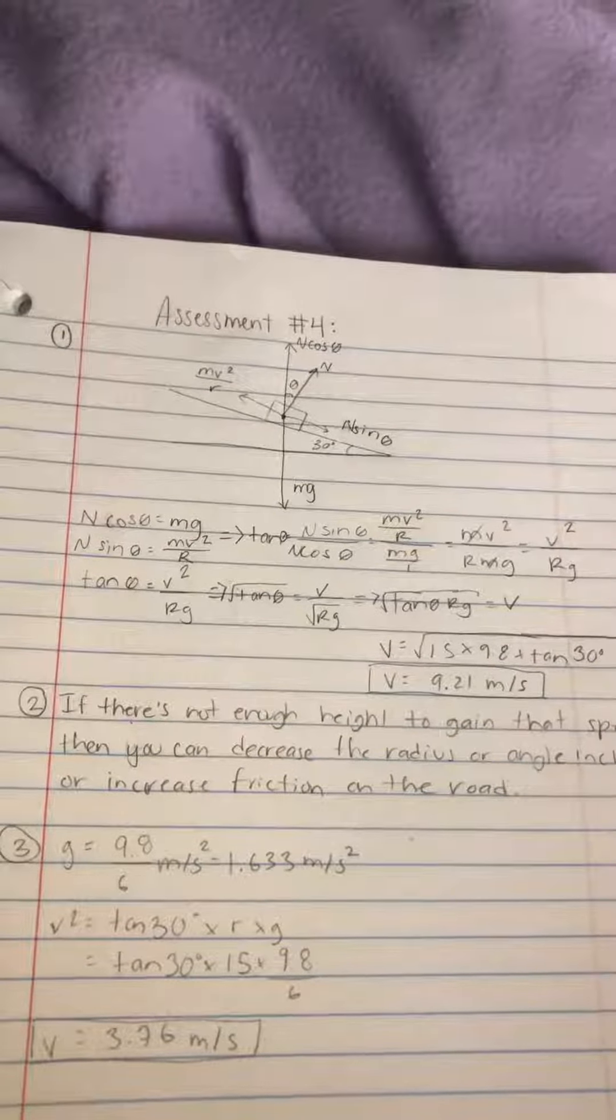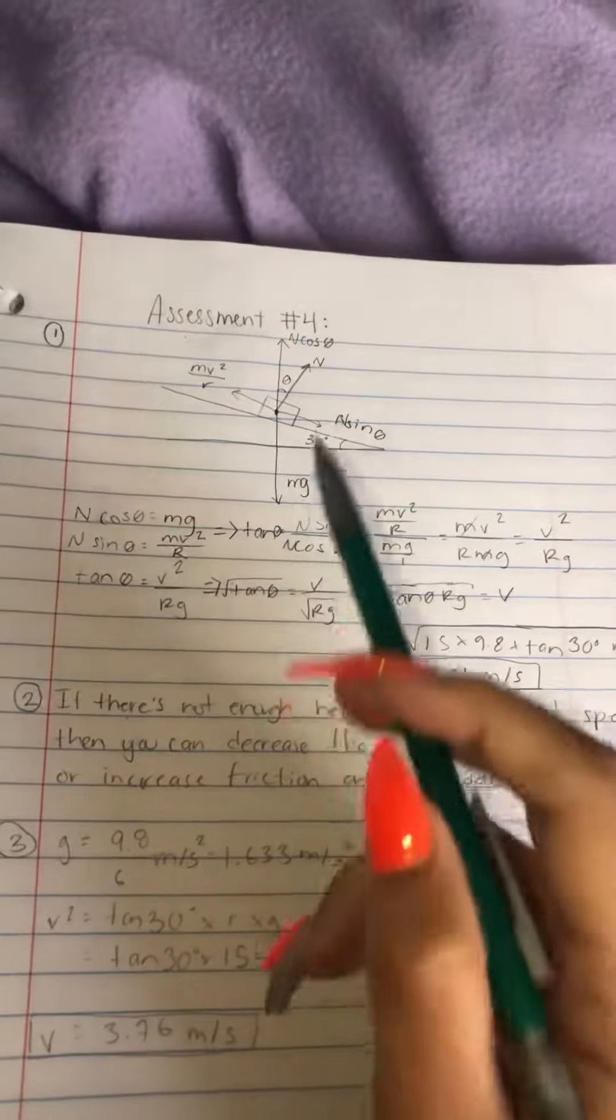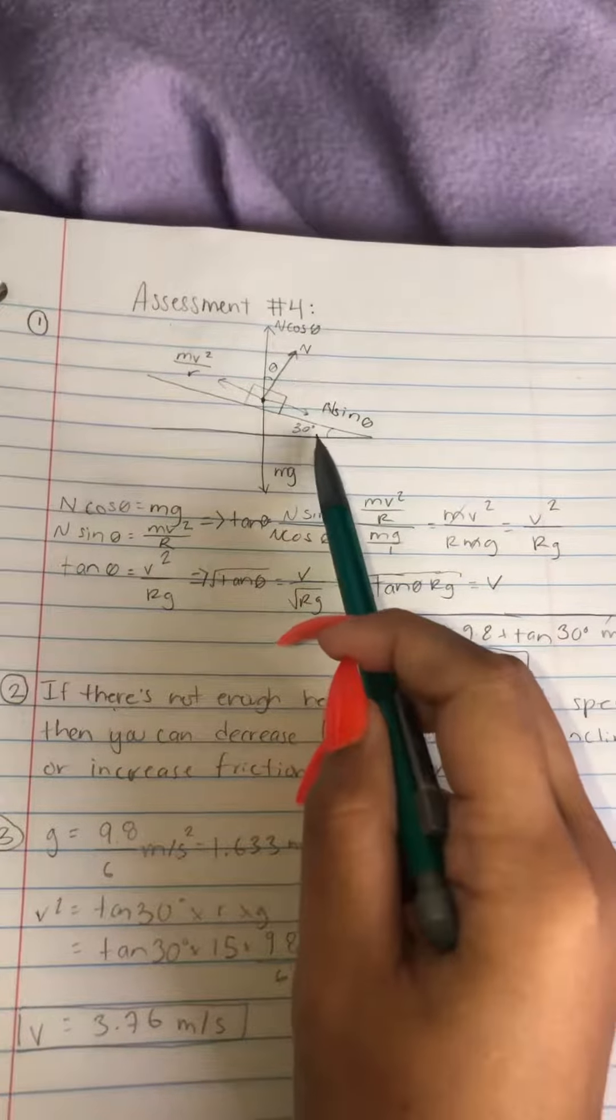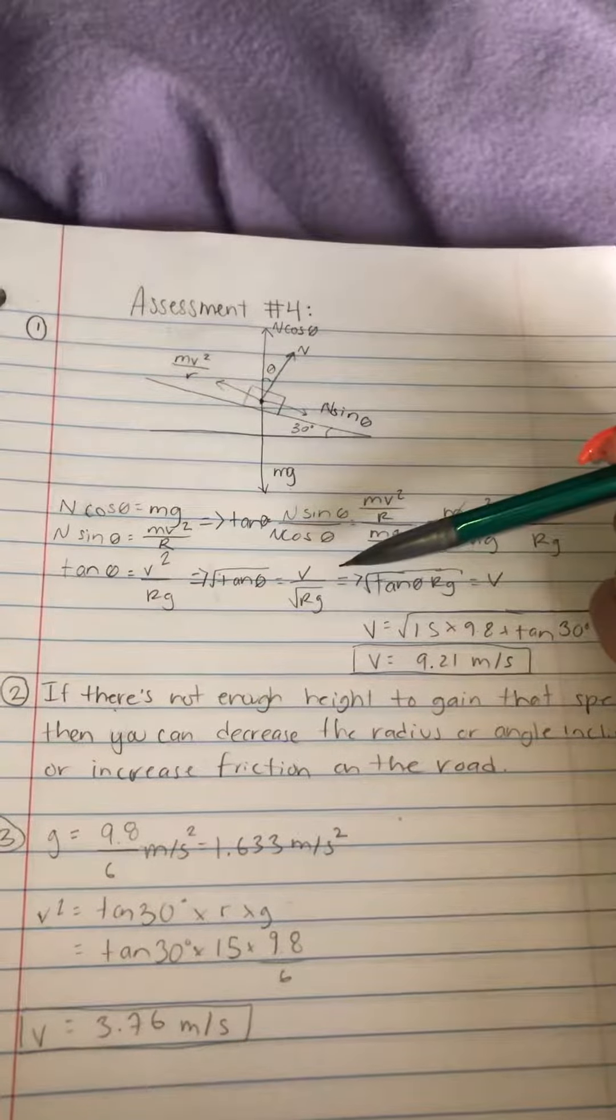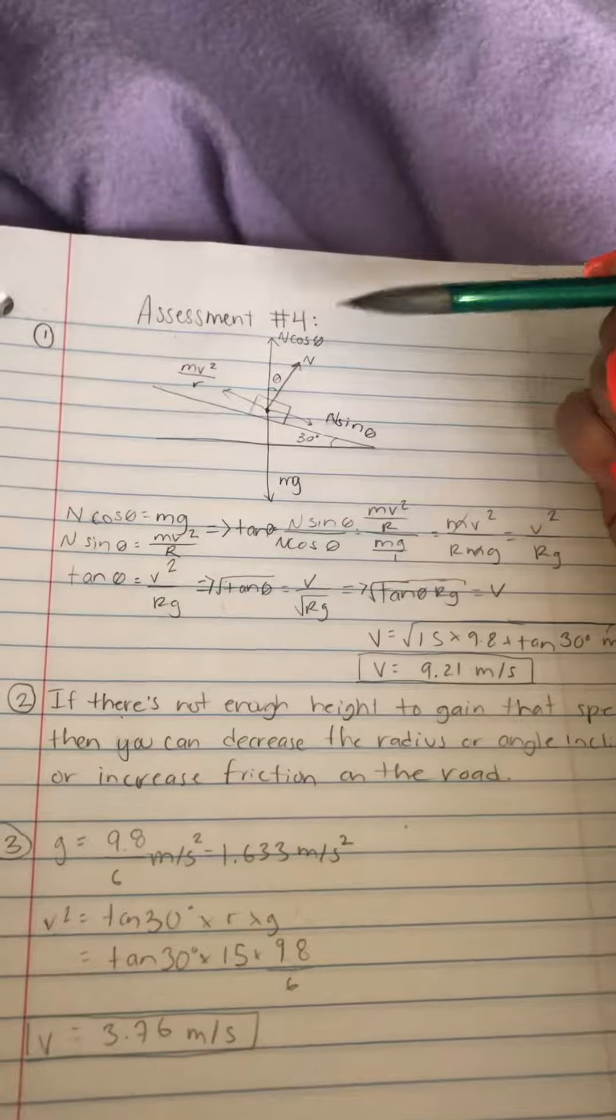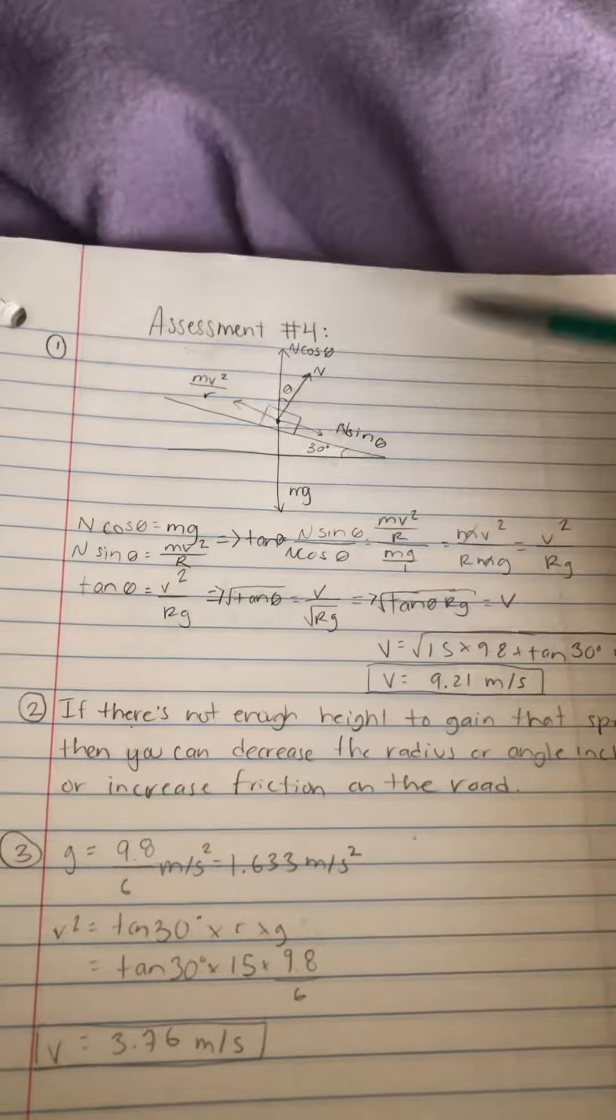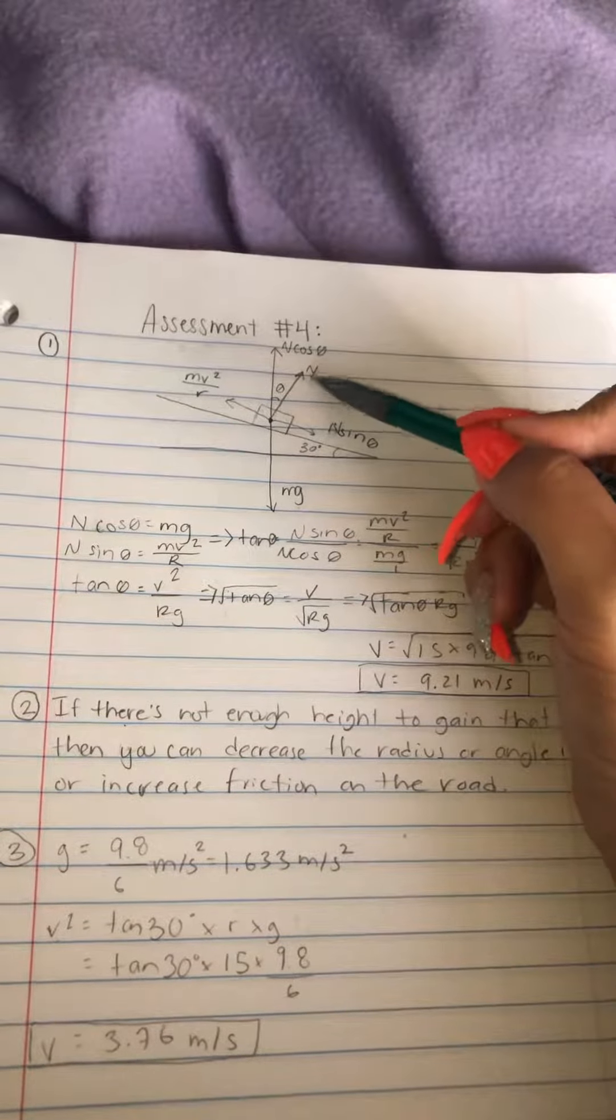First things first, you want to draw a diagram. Now, the inclination is 30 degrees. You know that mass and gravity is going down. The y is n cosine theta, x is n sine theta, and then this is n.